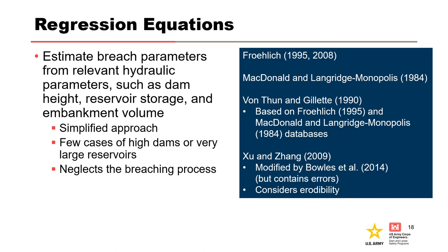Prediction equations are another simplified approach to estimate breach parameters as a function of dam height, reservoir storage, and embankment volume. They have the same limitations as comparative analysis because the regression equations are based on the same databases. Some of the more common regression equations are listed on this slide. Only Xunjiang 2009 incorporates erodibility as a predictor variable. As previously mentioned, EHAS and Bowles 2014 made major modifications to the Xunjiang database. Bowles 2014 indicated they eliminated case histories for concrete-faced dams and embankment dams with core walls or cutoffs, and omitted all Chinese dams to avoid potential criticism associated with indirect access to the original references.